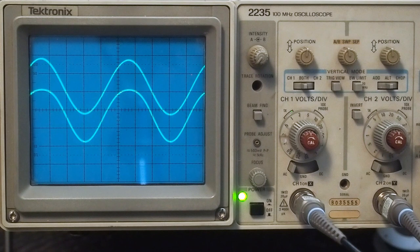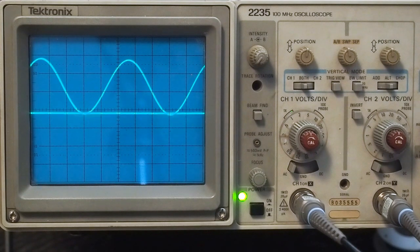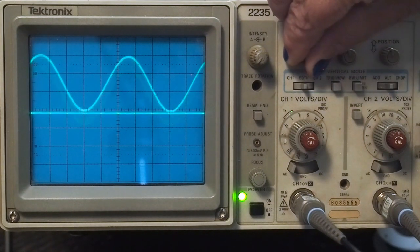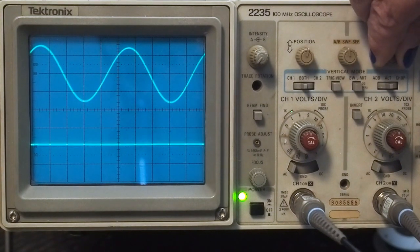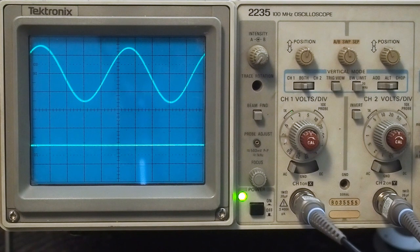There's no way that this distorted signal going into the output tube is going to sound better than the cascode. The next thing we want to do is hook this up to the analog discovery tube with the audio analyzer suite and see what we get with THD versus distortion, frequency response, and all the other tests.